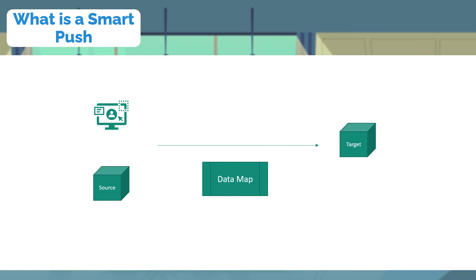There are Smart Push requirements across industries and in some implementations where the data being pushed from source to target involves separate intersections, and in those cases the user might not have access to the target they wish to push data to. Some use cases are: intercompany transfers — pushing source materials and dollars to a target the user does not have access to — or a data form with multiple scenarios where the user wants to push data for all scenarios but only has access to a subset. To overcome this security governance, the underlying data map needs to be run as an admin.